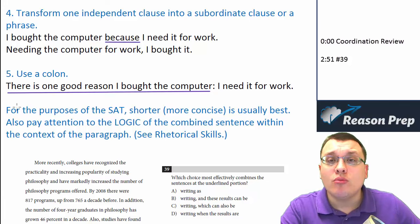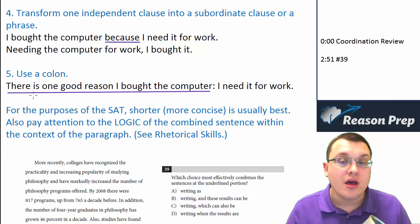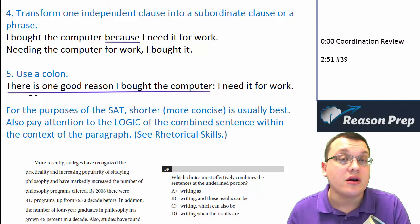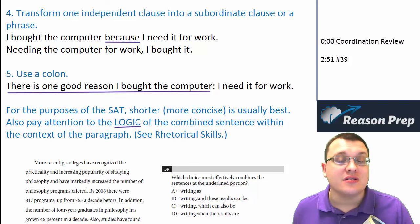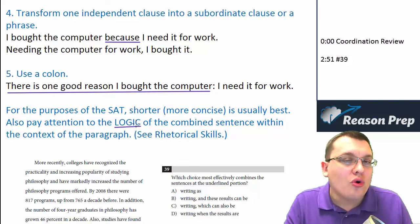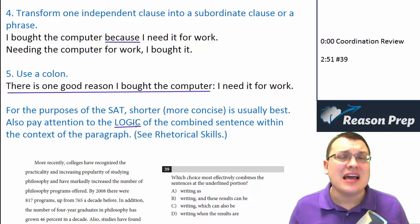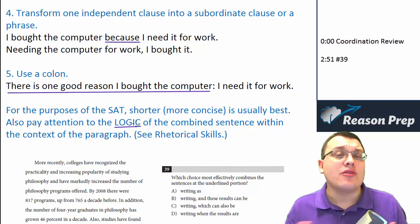For the purposes of the SAT, shorter and more concise is usually best. Remember this when you're combining sentences. On one hand, there's a grammar component to this. On the other hand, there's a style and concision component. We want to make sure our sentences are clear and unburdened by wordiness. Another consideration is logic — when combining sentences, does it make logical sense to use a particular conjunction, a semicolon, or connect them in one way and not another? We can't really separate the grammatical and the rhetorical component; they both work together to express some thought.